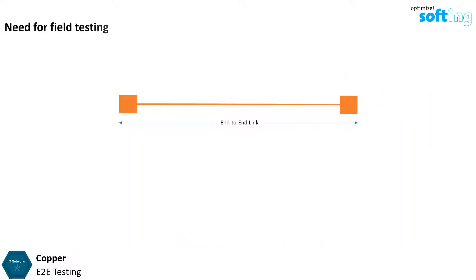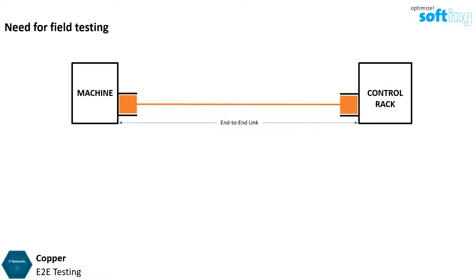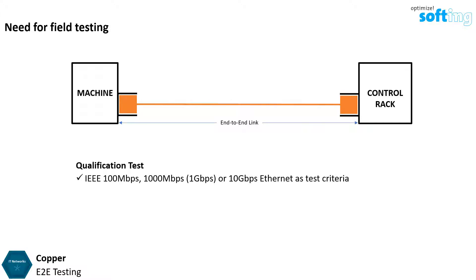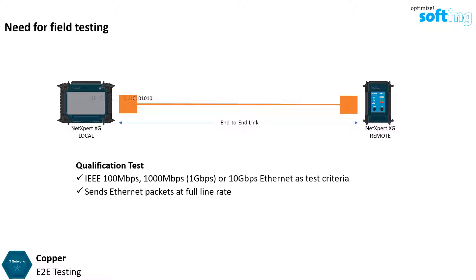Since it is very common in industrial applications to build a customized link — for example, between a machine and the control rack — field termination of the plugs of the end-to-end link becomes important. There are two methods to perform field testing that can be applied for end-to-end links. Qualification test uses the IEEE 100Mbps, 1000Mbps, or 10Gbps Ethernet as a test criteria.